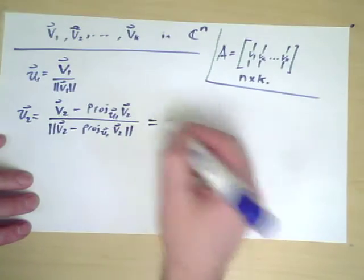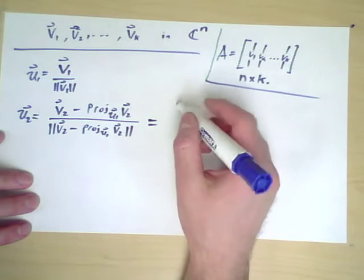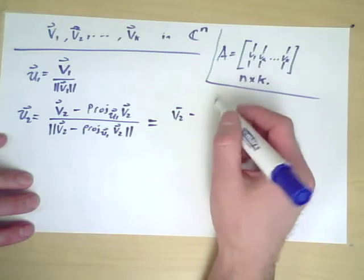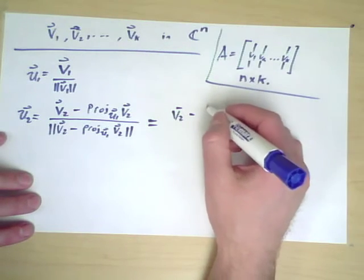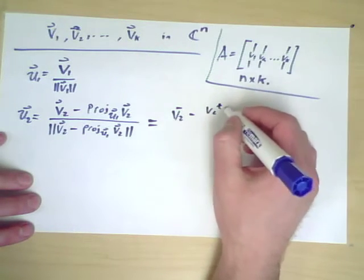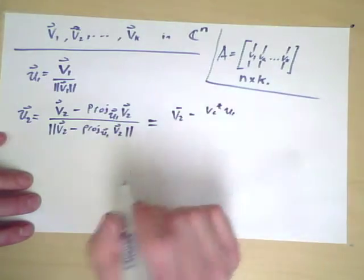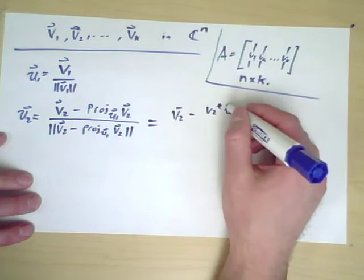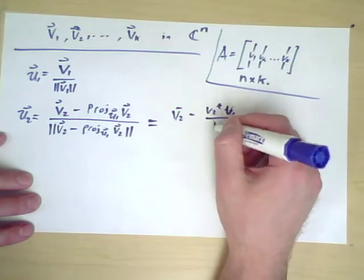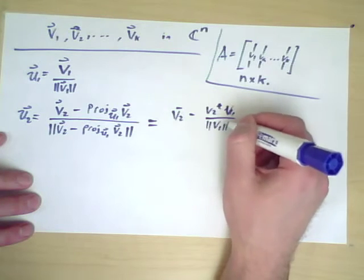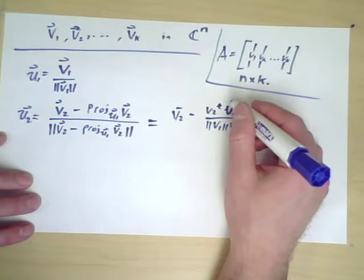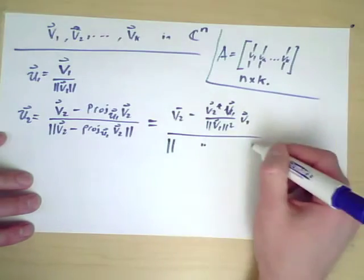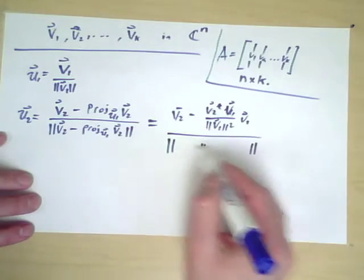In terms of a formula, it's quite easy to write down. V2 minus, let's see, the projection operator. We can write it as V2 star U1. Now, U1 is already length 1. But if I write that in terms of V1, it's V1 over V1 norm squared V1, and then all that over its length. So all this also ends up down there.